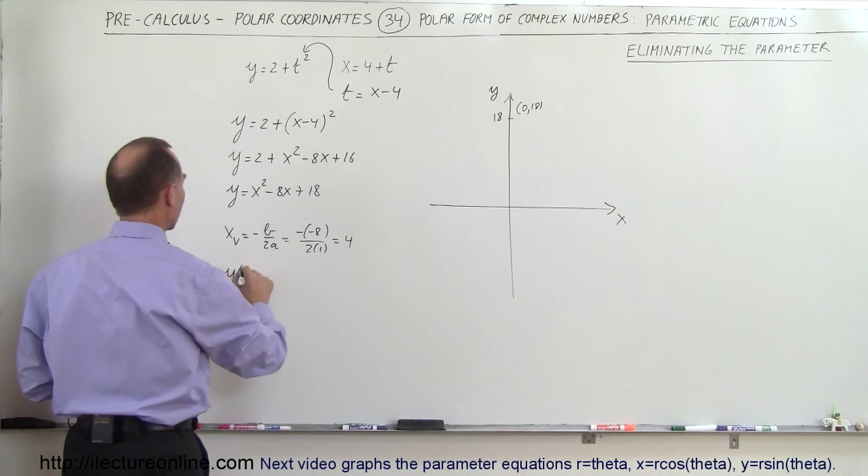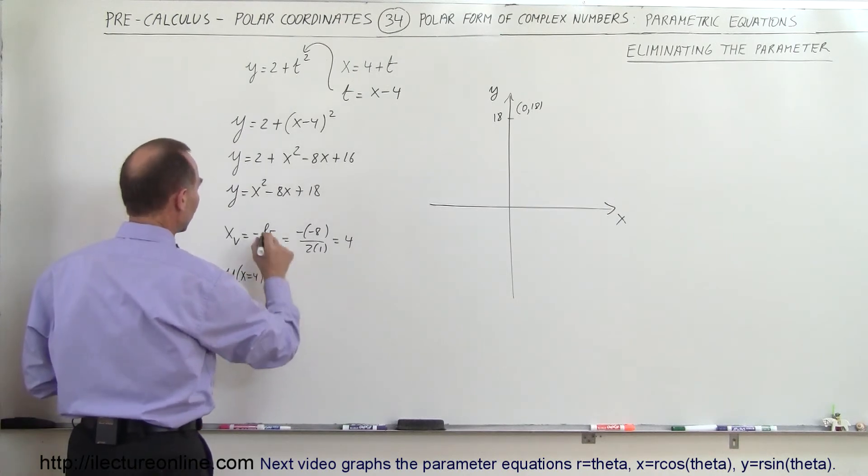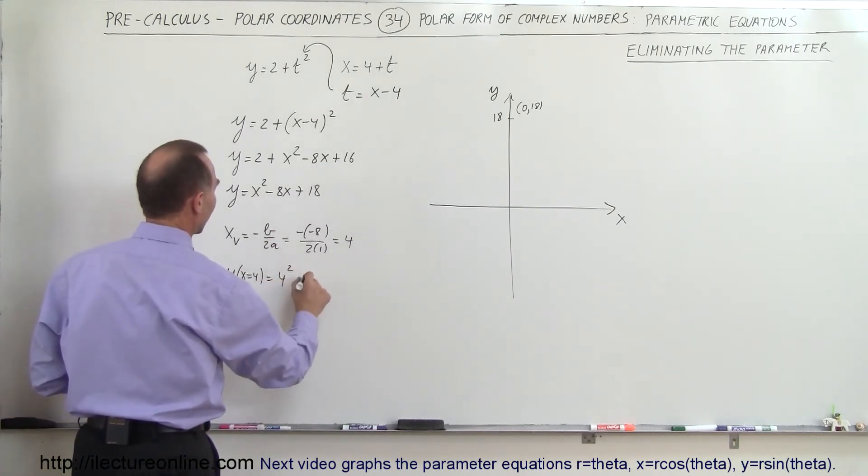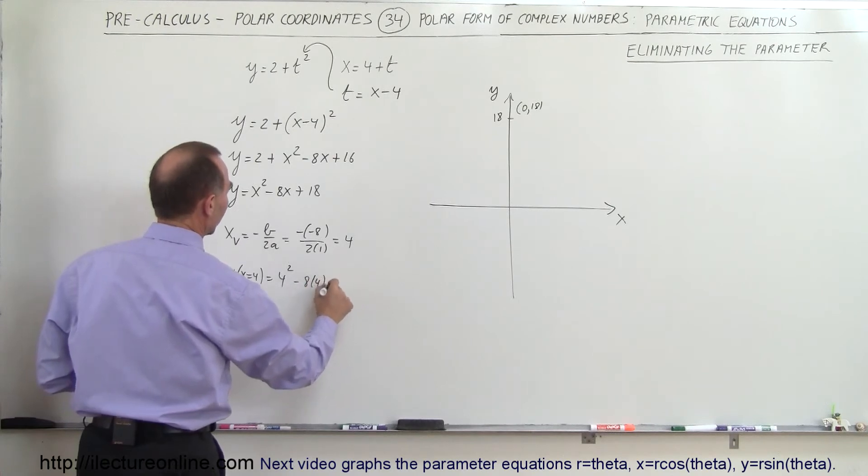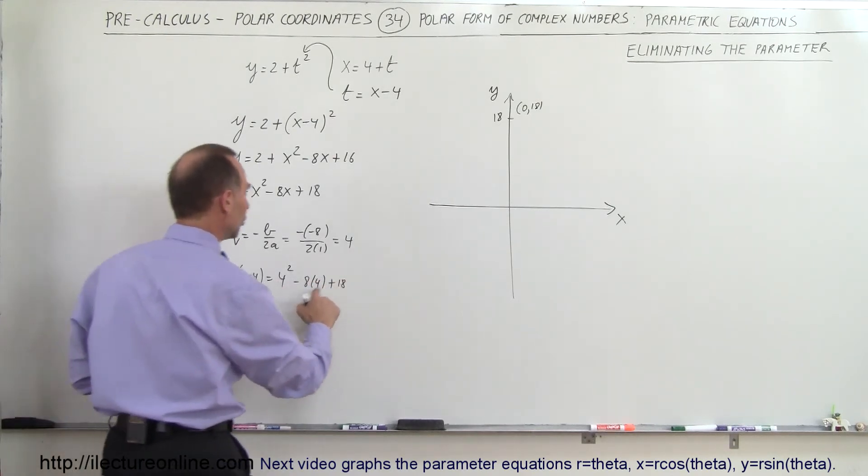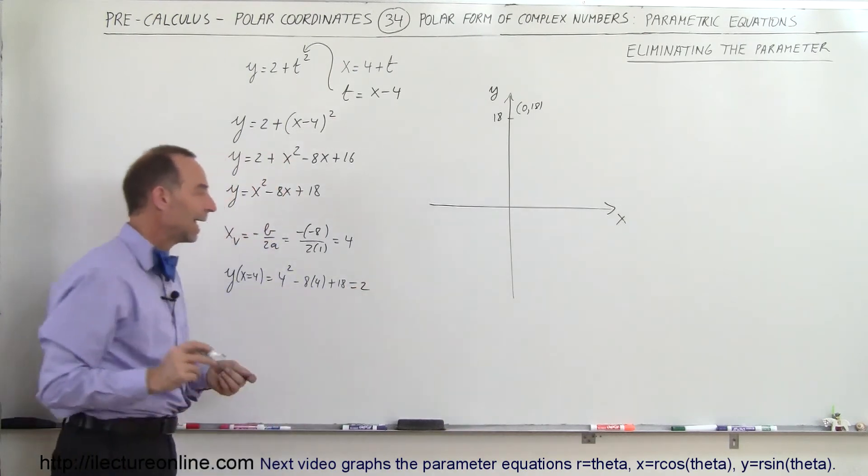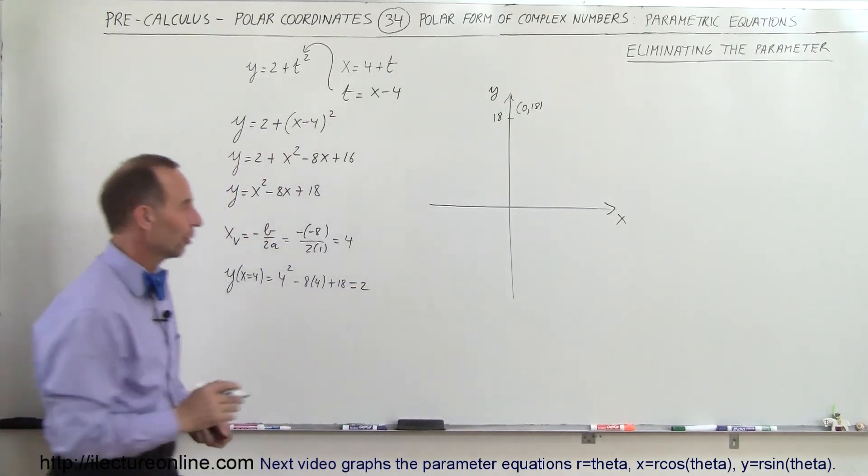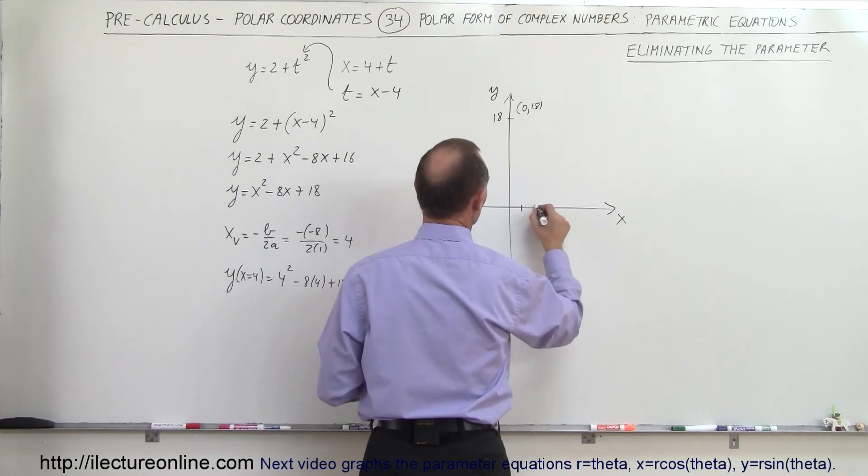If you plug that back into the equation, y when x equals 4 is equal to 4 squared minus 8 times 4 plus 18. That would be 16 plus 18 is 34 minus 32, that's equal to 2. So x equals 4, y equals 2 is the vertex. So 1, 2, 3, 4, 1, 2, so the vertex is over here.